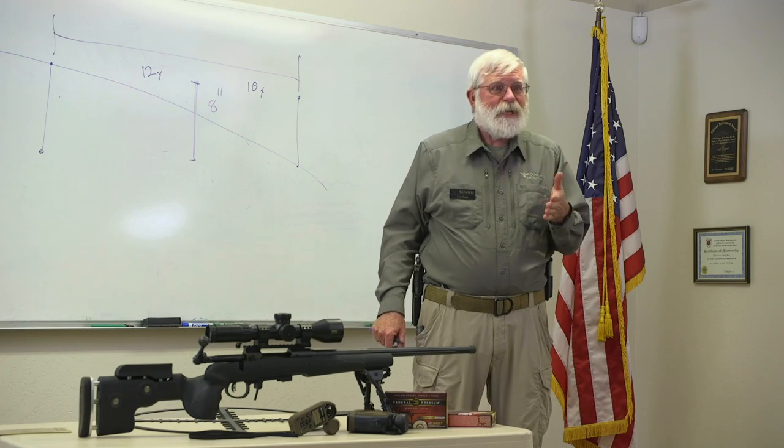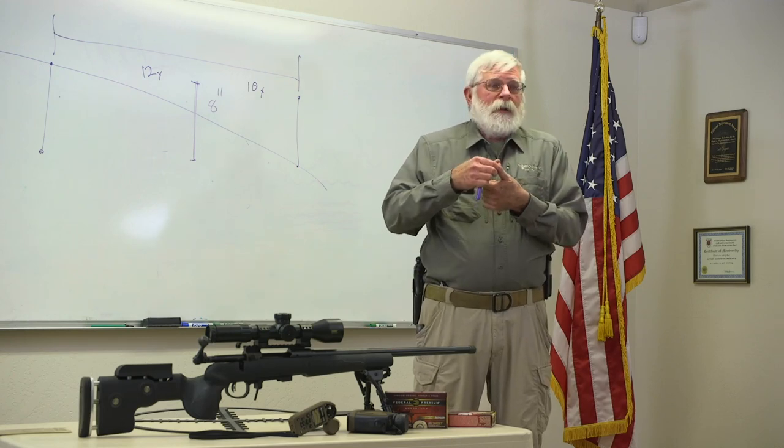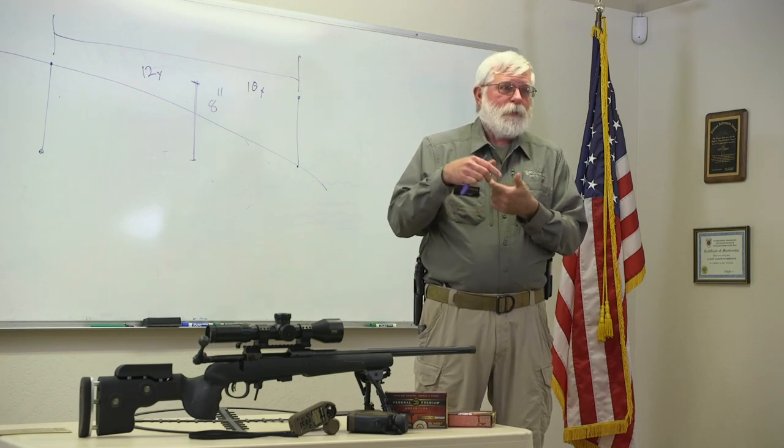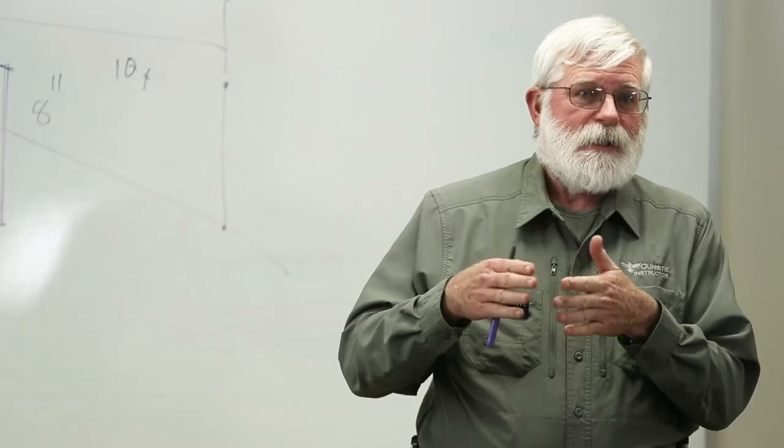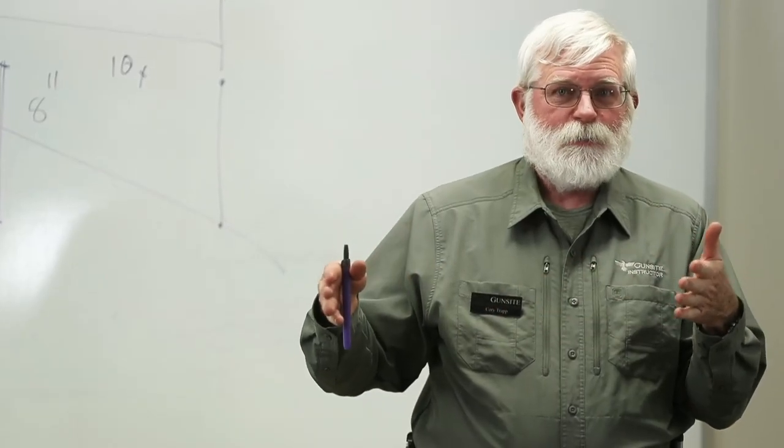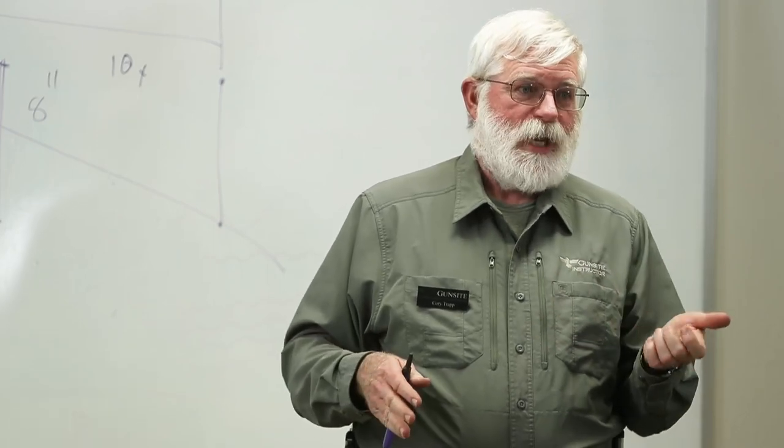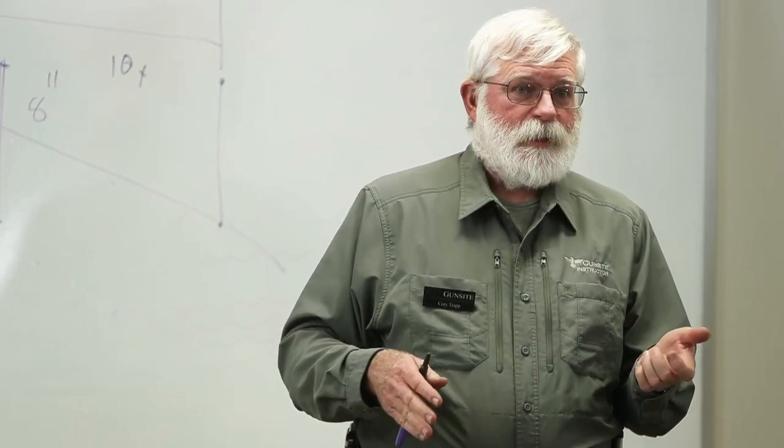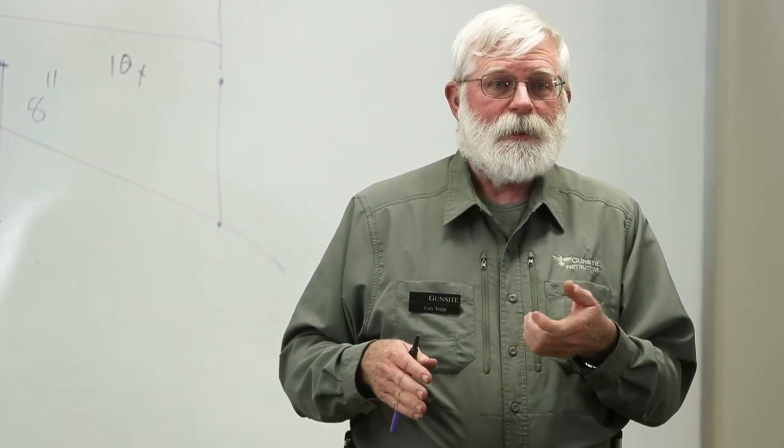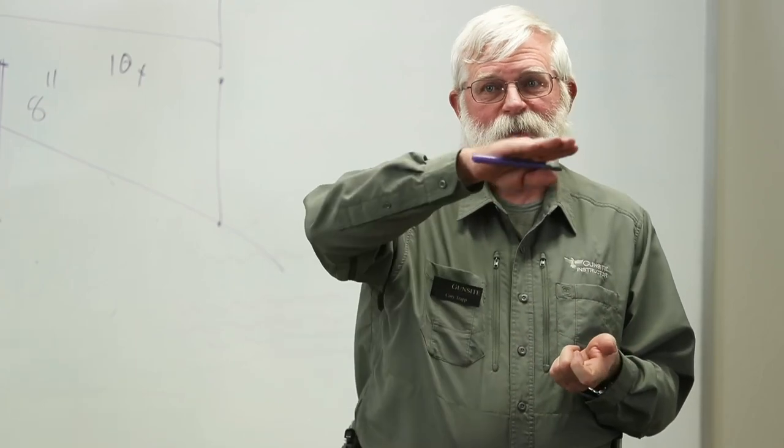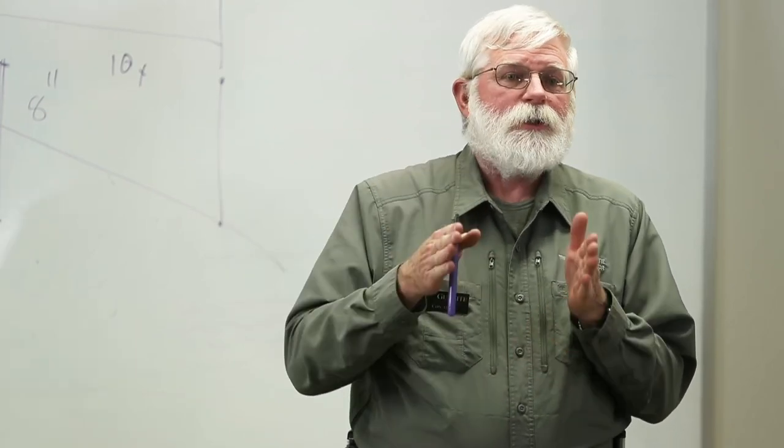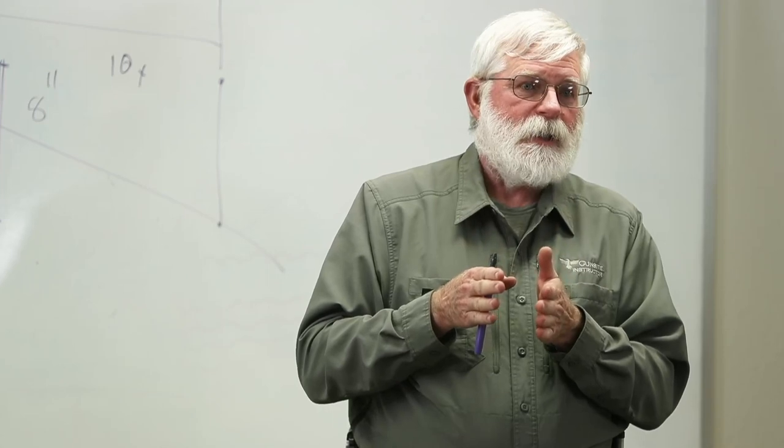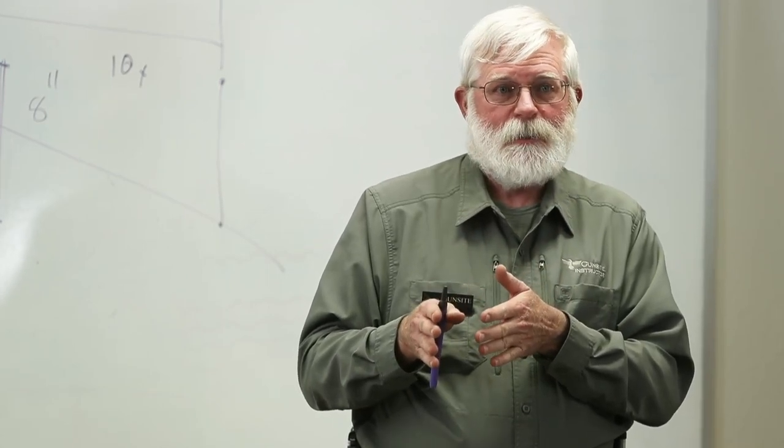How big is that space? A faster cartridge with a higher BC has a longer danger space. It's what people think of as a flatter trajectory. The slower the bullet and the lower the BC, the more of an arc, the shorter the danger space, and the more accurate the range needs to be.